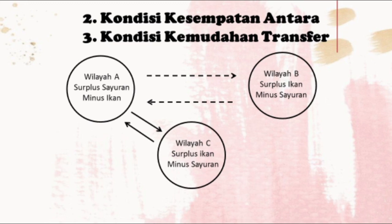Dan yang terakhir ada kemudahan transfer. Wilayah A akan menjalin interaksi dengan wilayah B apabila sarana dan prasaranannya mendukung. Jalan yang rusak dan sulit untuk dicapai akan mengurangi kemungkinan terjadinya interaksi karena biaya untuk mencapai juga akan lebih mahal. Sebagai contoh, seseorang akan menjual sayuran dari wilayah A ke wilayah B, namun jalan menuju wilayah B mengalami kerusakan sehingga tidak bisa dilalui, akhirnya orang tersebut tidak jadi menjual sayuran ke wilayah B.